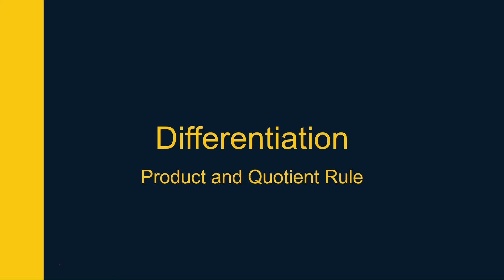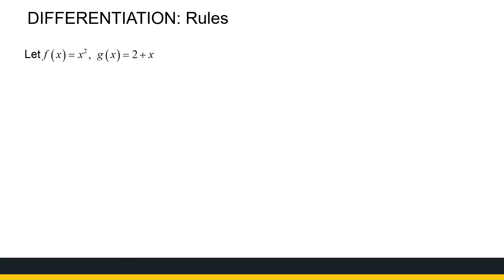Let us look at the product and quotient rule for differentiation. I want to start with some background — start with two functions f and g. What we're trying to see is how we can find the derivative of the product of two functions, f(x) times g(x).